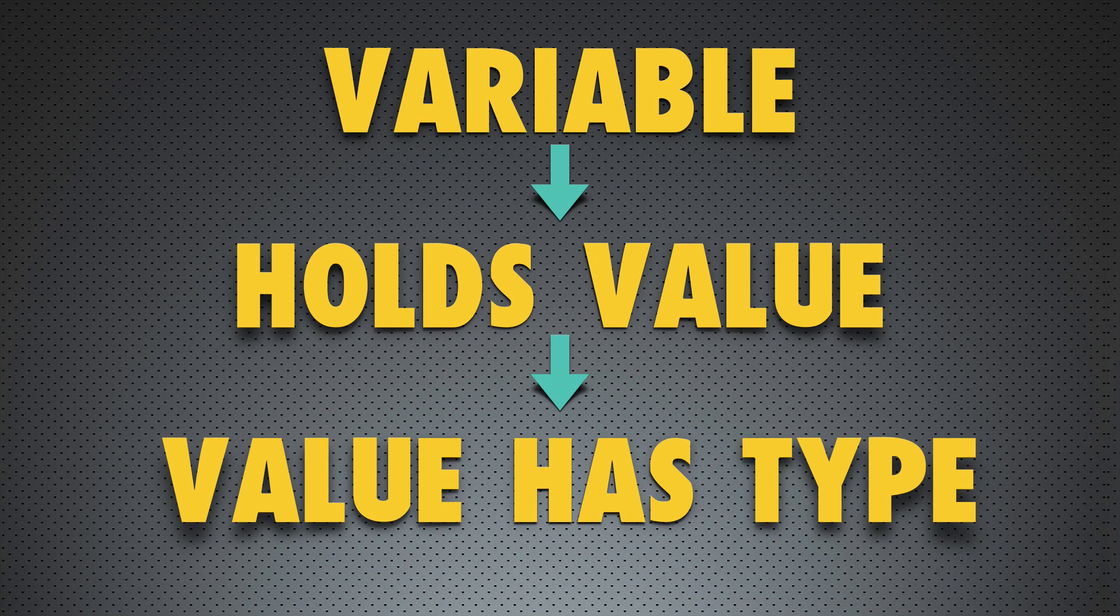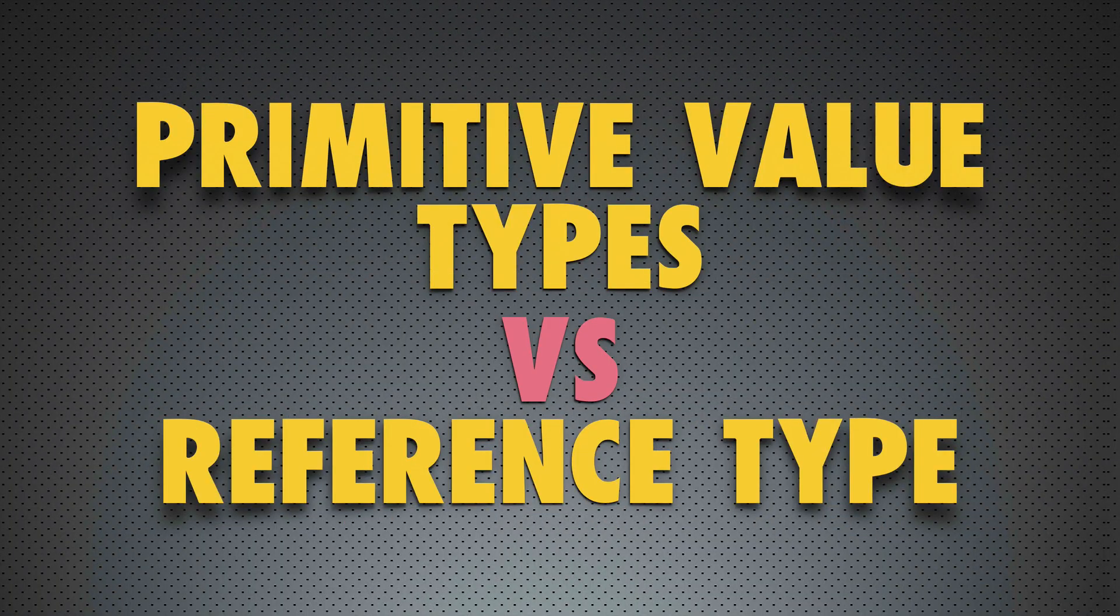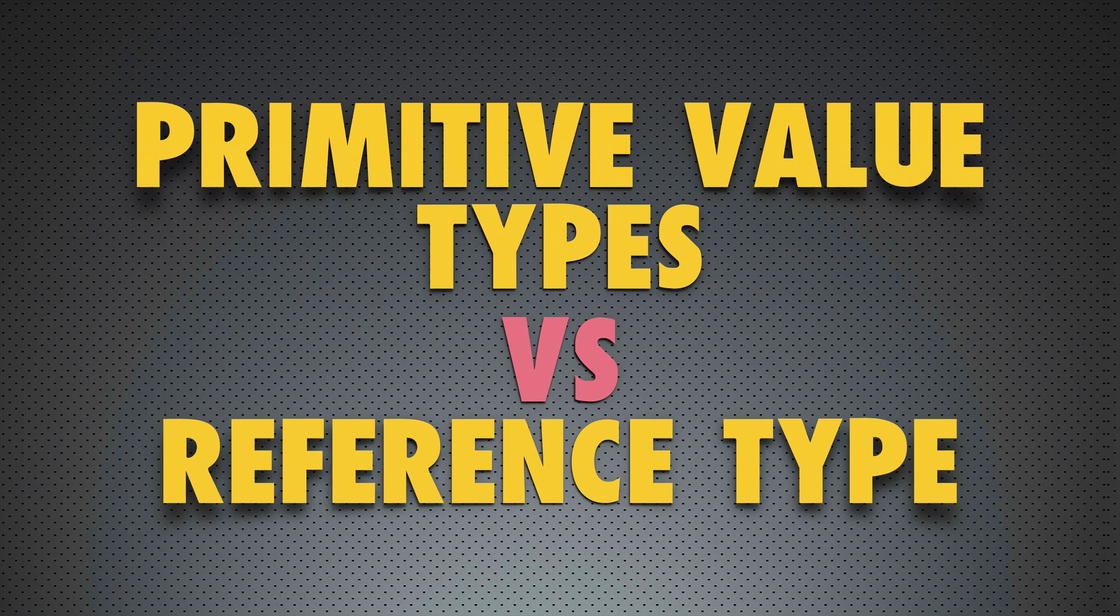And all value types in JavaScript are divided into two groups: primitive value types and reference type. And the reason for this division is in the way how values of those types are stored internally in the memory. But before talking about that, let's discuss which variable types exist in JavaScript.